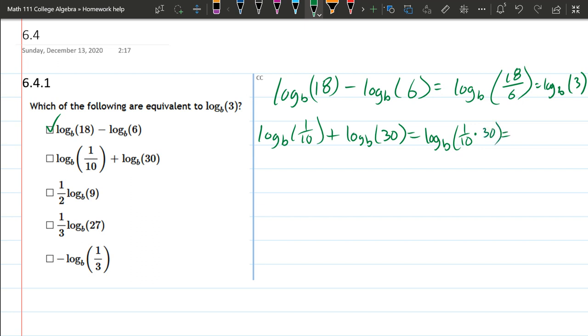This is the same as 30 over 10, and 30 over 10 reduces to 3. So this one is log base b of 3, which is equivalent to log base b of 3. We check the second one.